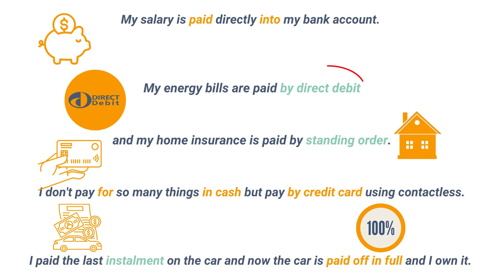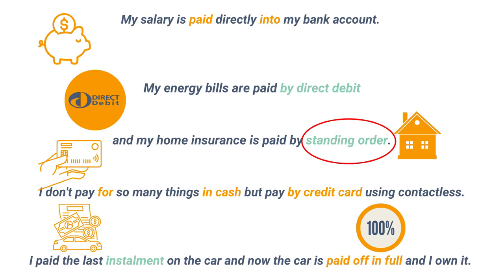The first new expression is 'direct debit'. Direct debit is an arrangement with a bank that allows a company to transfer money from the account on a date that's agreed. For example, I've agreed with my energy companies that they can take the money from my energy bills on the first of every month for the preceding month. A standing order, on the other hand, is a little bit different — it's an instruction I have made to my bank to make regular fixed payments. So direct debit can be variable and standing order can be fixed.